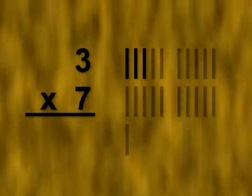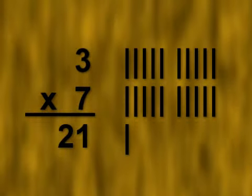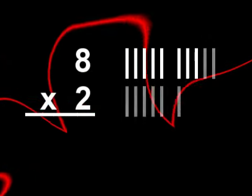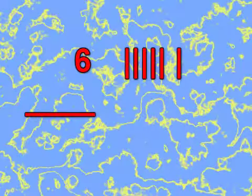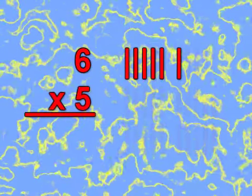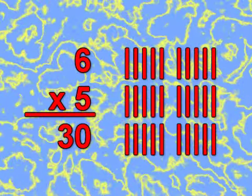6 times 4 equals 24. 3 times 7 equals 21. 8 times 2 equals 16. 6 times 5 equals 30.